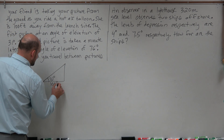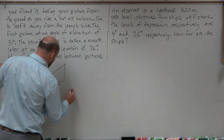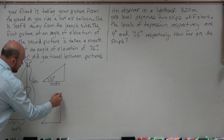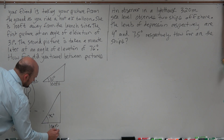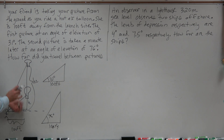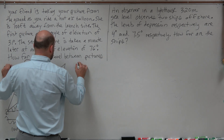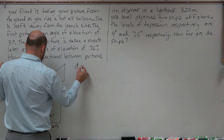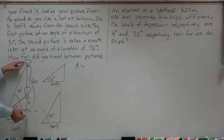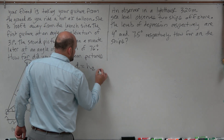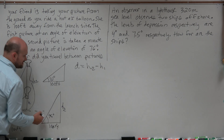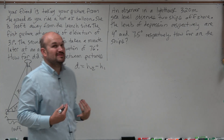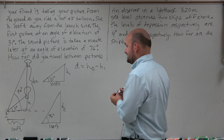So basically we have two triangles. Triangle number one has an angle of elevation of 31 degrees, and you're 100 feet away. For picture number two, nothing changed with the distance — only the angle of elevation changed. Therefore, the distance you traveled from the first picture to the second picture is equal to h2 minus h1. Where h2 is the height for your second picture, and h1 is the height for your first picture. Now all we need to figure out is what h1 and h2 are.